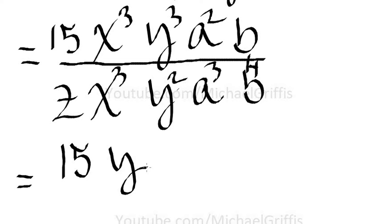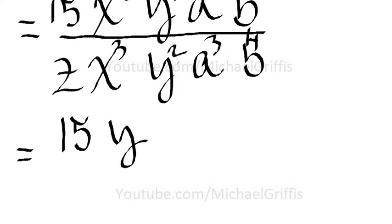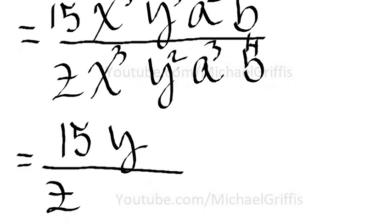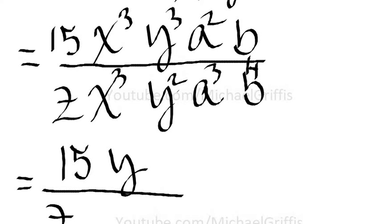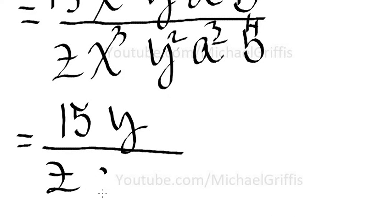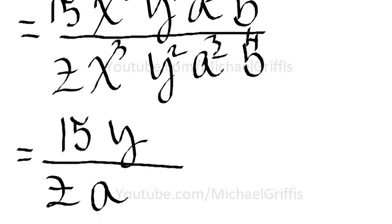The numerator reduced down quite a bit. In the denominator, we'll rewrite the z. That x cubed canceled out, y squared's gone. We have a squared in the numerator, a cubed in the denominator, so that reduces down by one a.